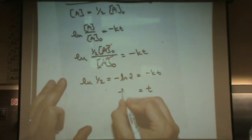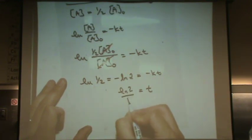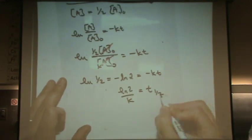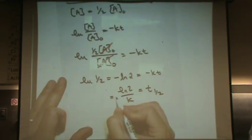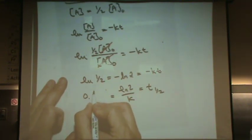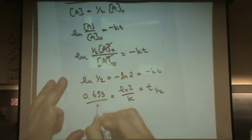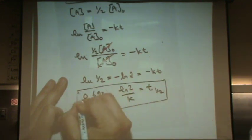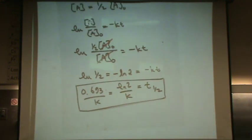t equals the natural log of two over k. Remember this is a half life, so I'll put a little one half there. And if you calculate out, the natural log of two is 0.693 per k. And that's the formula for the half life. It's only dependent on the rate constant in this case.